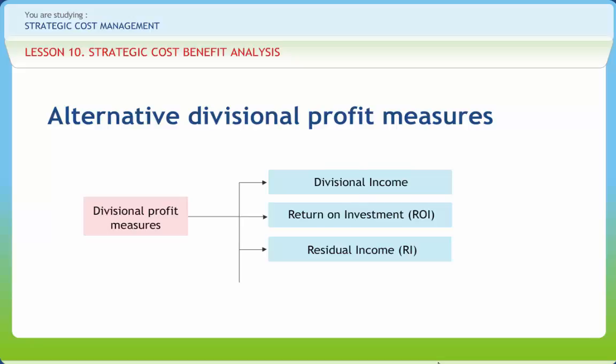Residual income probably comes close to measuring what shareholders really care about. Residual income is net operating income or net after-tax earnings plus interest, net of the tax effect, less the desired rate of return on investment multiplied by the amount of investment. The calculation of EVA includes a deduction for the cost of capital and also adjusts accounting income to more accurately reflect the economic effect of transactions and the economic value of assets and liabilities. The EVA concept extends the traditional residual income measure by incorporating adjustments to the divisional financial performance measure for distortions introduced by Generally Accepted Accounting Principles.